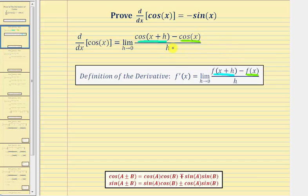All divided by h. Now we want to expand cosine of the quantity x plus h using the sum identity for cosine, shown here below for reference, where the cosine of the quantity a plus b equals cosine a times cosine b minus sine a times sine b. In our case, a equals x and b equals h.